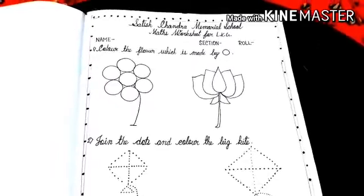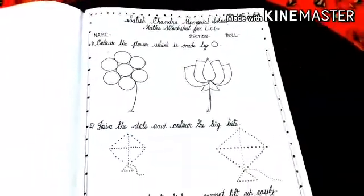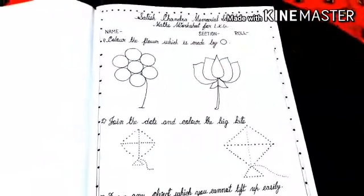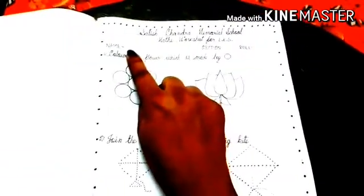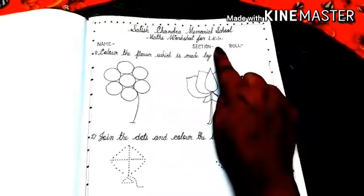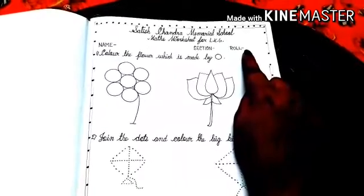Children, look at this. This is a worksheet of maths. Okay? At first, you have to write your name, then section and roll number.